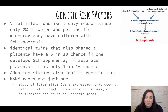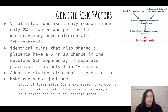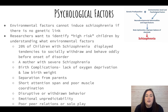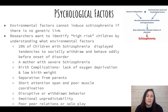Viral infections aren't the only reason, since only about 2% of women who get the flu have children with schizophrenia. Adoption studies confirm that genetics and environment can essentially turn on certain genes. You can have the genetic predisposition and not get schizophrenia — you need both the predisposition and environmental factors. Environmental factors alone cannot induce schizophrenia; there must be a genetic link. This is not true for all disorders, but it is true for schizophrenia.